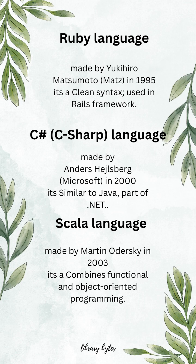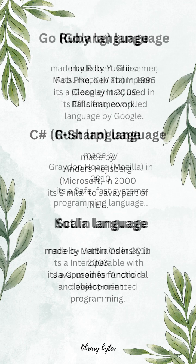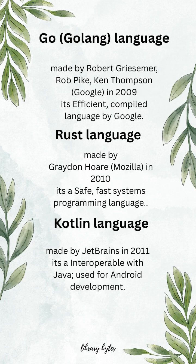Scala, made by Martin Odersky in 2003. It combines functional and object-oriented programming. Go (Golang), made by Robert Griesemer, Rob Pike, and Ken Thompson in 2009. It's an efficient, compiled language developed by Google.